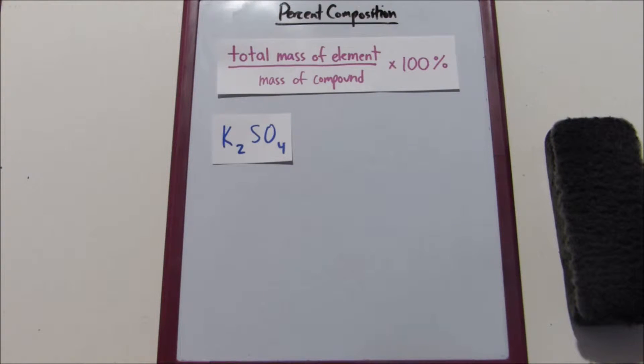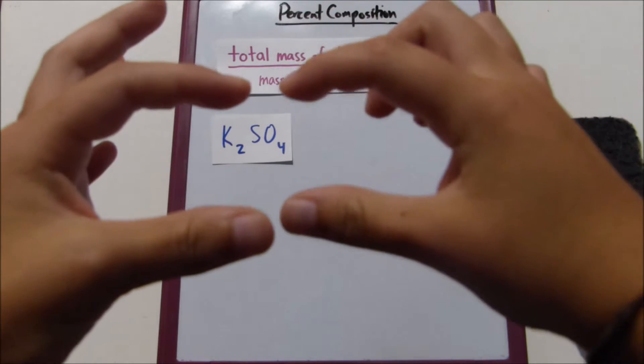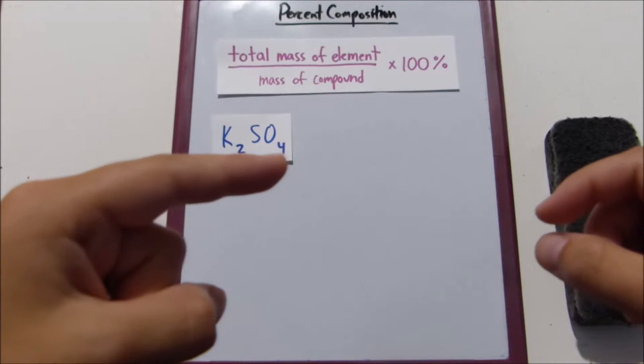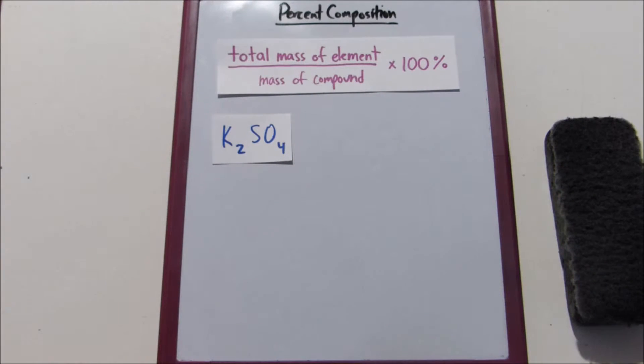And then the denominator is the mass of the entire compound. So we want to find the mass of everything within this compound. We want to find the mass of the two atoms of potassium, the sulfate, and the four atoms of oxygen.